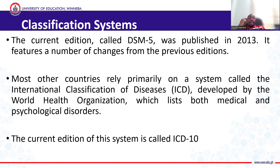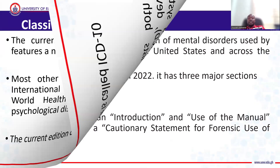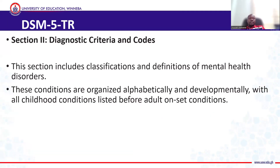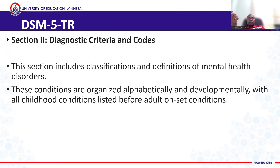Previously, we used the ICD — the International Classification of Disease — and the current one in use is ICD-10. Aside from that, we have the DSM-5TR, the text revision, which was revised in 2022. It has three major sections. Section one covers DSM-5 basics — how to use the manual. Section two covers diagnostic criteria and codes — the criteria we use in diagnosing a situation and the codes we use to label them.